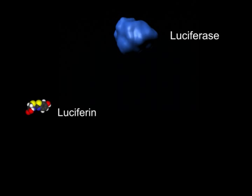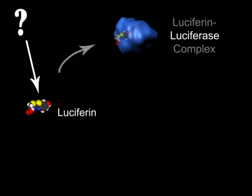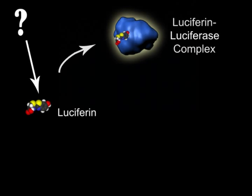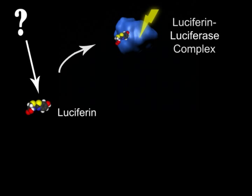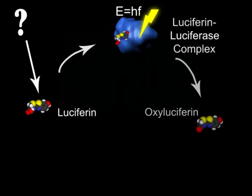This is where the enzyme luciferase catalyzes the process of light production. The substrate on which luciferase acts is a small molecule called luciferin. Unfortunately, the pathway through which luciferin is synthesised is yet to be characterised. However, some of the other biochemical processes that occur in the luciferin pathway are better understood. When a luciferin molecule forms a complex with luciferase, it temporarily forms an excited structure. This excited state quickly drops down into a more energetically favourable form, but in doing so it emits a photon. The frequency of the photon is proportional to the energy change.